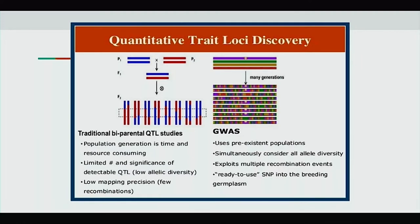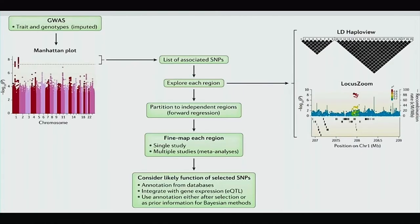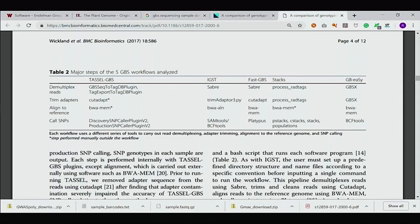In traditional QTL studies you have characterized parents and just a low-resolution mapping position — not very precise, just a range. With GWAS you get SNPs and associations as probabilities and allele frequencies across chromosome locations, usually displayed in a Manhattan plot format which looks like New York's skyline. You get a list of associated SNPs and can explore different genomic regions.